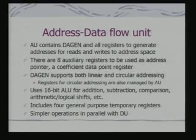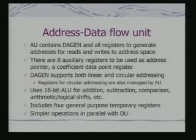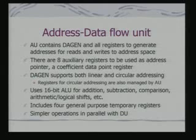The address data flow unit contains logic for address generation. Since there are multiple data buses, multiple operands can be fetched simultaneously, requiring address generation for each. It uses a separate 16-bit ALU — different from the ALU used for actual computations — and includes four general-purpose temporal registers. Simpler operations can be executed in parallel with the data computation unit, since the 16-bit ALU allows an instruction to execute in parallel with one being executed on the data unit.